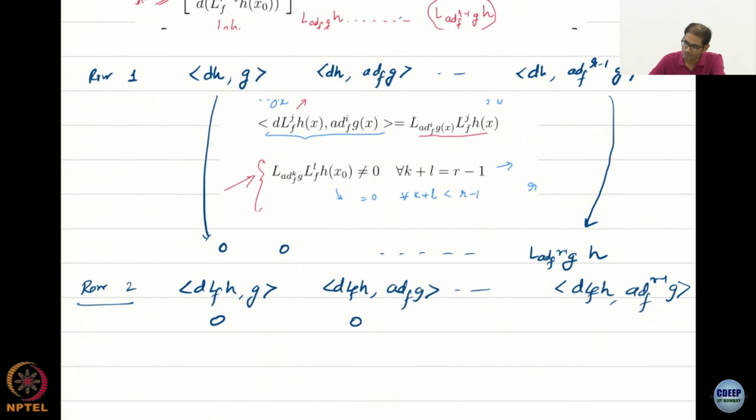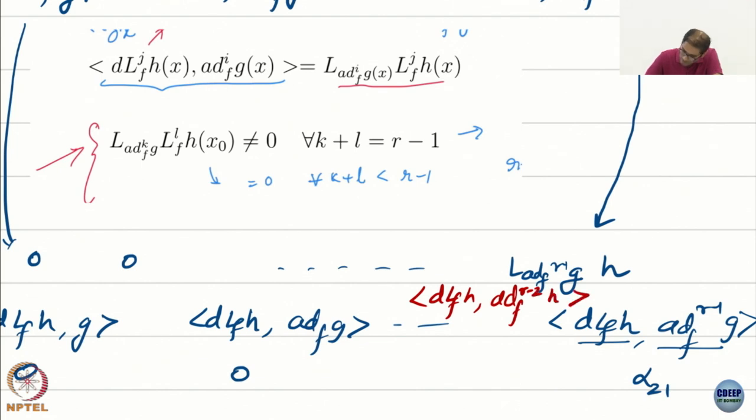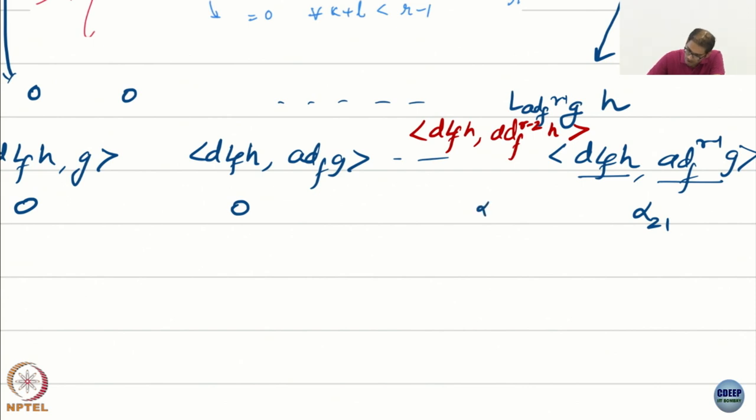Let us look at the last term. In the last term, again, j is 1. What is this guy? r minus 1. Sum is r. So this is not equal to 0. So there is some, actually I am going to make my life simple and call it alpha_2,1, which is non-zero. What about the term before the last one? What is the term before the last one? d L_f h add_f^(r-2) h. Non-zero. That is because the sum is r minus 1. Because j is 1, i is r minus 2. So again I have r minus 1, which is non-zero. So I have something which is alpha_2,2.